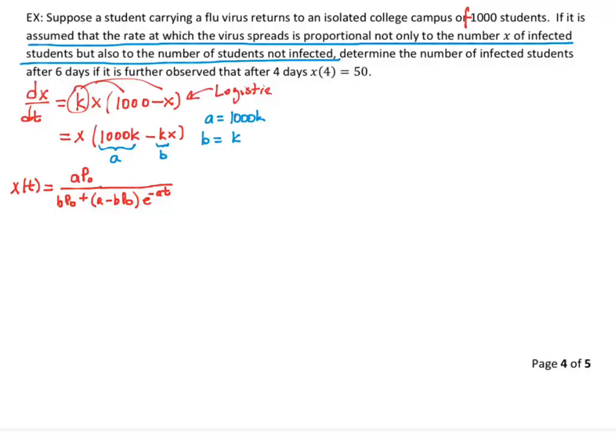All right, so plugging in the numbers that we have, by the way, what's the initial condition? I guess I should go ahead and throw that in here. What is x at 0? x at 0 is 1 because we start with one student coming back to campus infected.